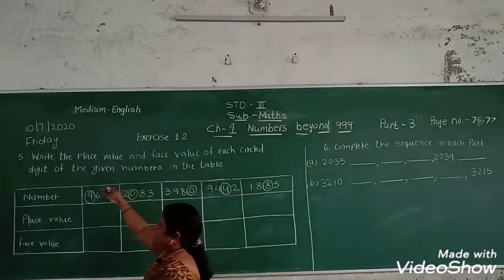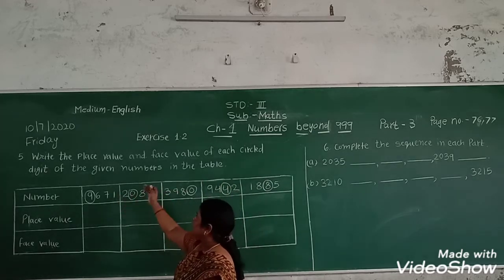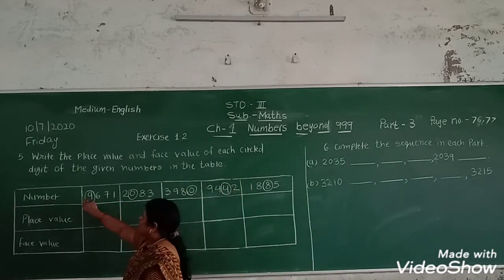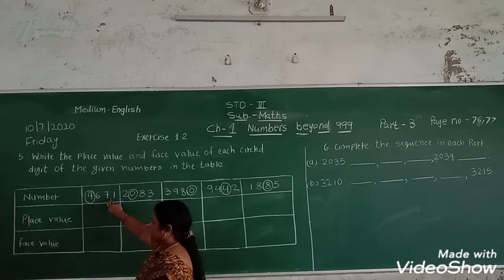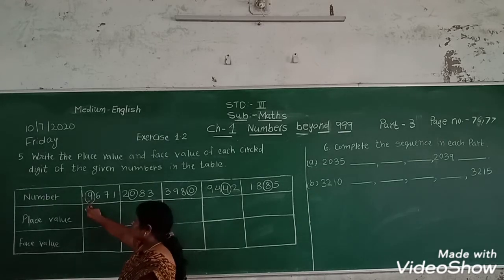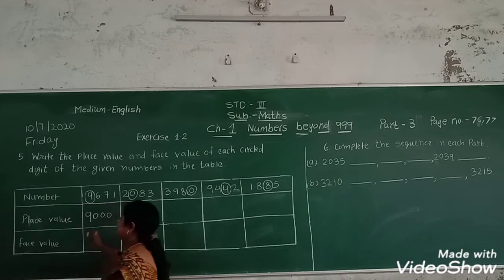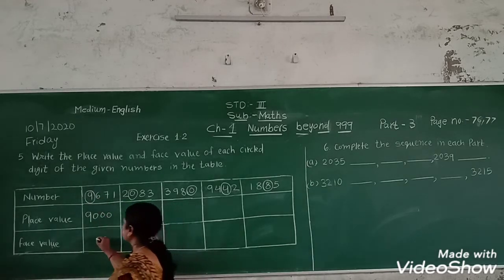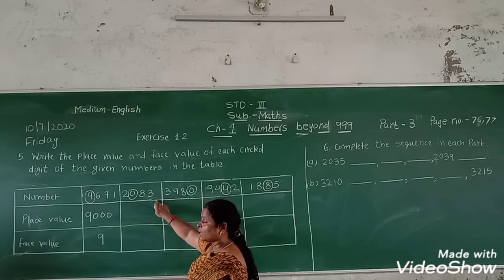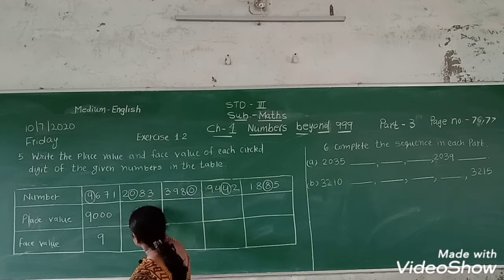Now next question five: write the place value and face value of each circled digit of the given numbers in the table. The number is nine thousand, six hundred, seventy-one. The circled digit is nine. Nine is in the thousands place, so the place value is nine thousand, and the face value is nine.